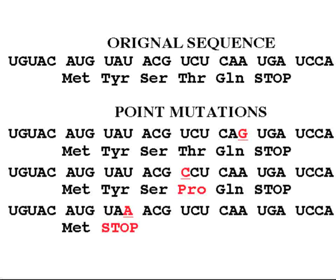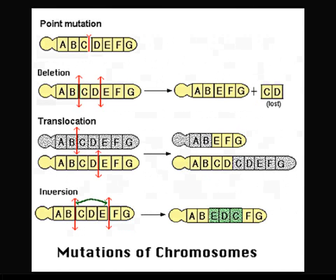Mutations can typically have one of three effects. Some of them are bad — they decrease the overall fitness or survivability of the organism and are not selected for. The vast majority of them are neutral, meaning they provide no change whatsoever to the organism's fitness, and it is neither helped nor harmed. The third type, which is the rarest, are beneficial mutations, which help the organism by increasing its fitness and the likelihood that it will reproduce and pass on that mutation.